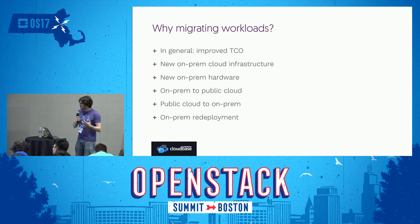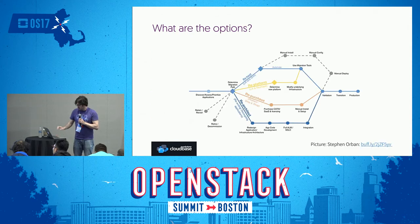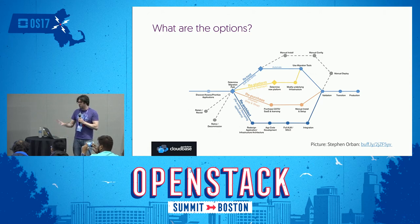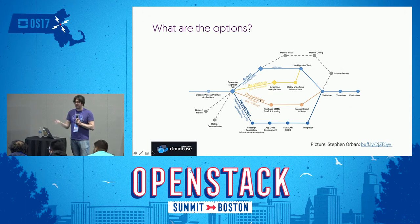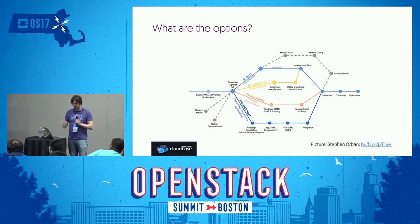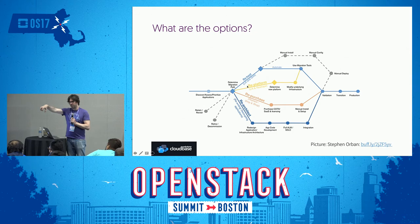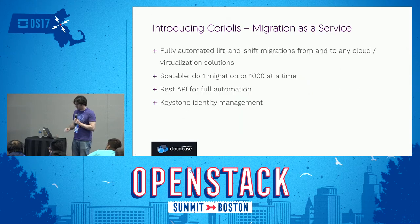Quite a lot of companies come to us asking how to do that. I took this picture from Stephen Orban from Amazon because it's very clear on what you can do from a migration perspective. I'll go into details tomorrow, but the options we care about are re-platforming and re-hosting. Re-platforming means you take your applications and transform them into something else - think PaaS, containers. Re-hosting consists in taking your virtual machines, moving them to the target, and putting them there. That's what we're talking about in this session.